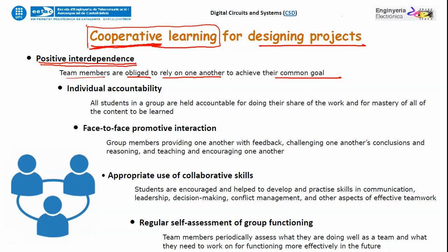Positive interdependence is like the musketeers. The second point is individual accountability: with three people in the group, no one can hide behind the others. All three of you must be accountable — you have to do your share of work, master the class content and the project, and be able to explain it.